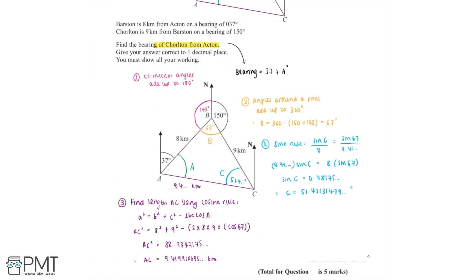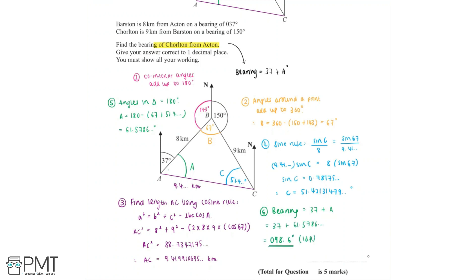Using all the information found, we can now find angle A, which is in green. We know that angles in a triangle add up to 180 degrees, so angle A is equal to 180 take away (67 plus 51.4), which is approximately equal to 61.5786 degrees. The bearing of Cholton from Acton is equal to 37 degrees plus angle A, so the bearing is equal to 37 plus 61.5786, which is equal to 98.6 degrees to one decimal place.